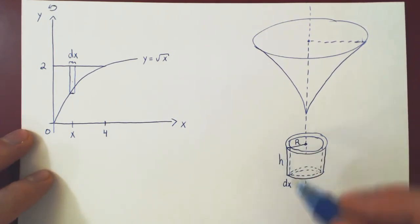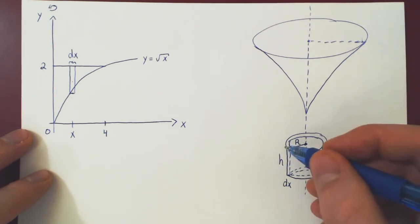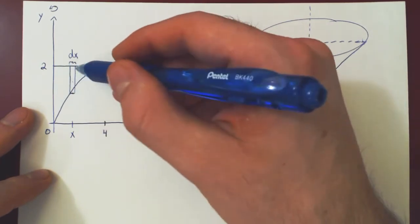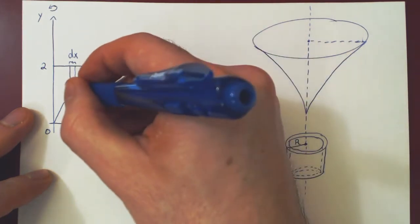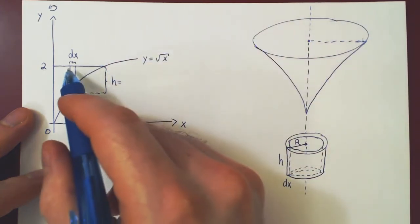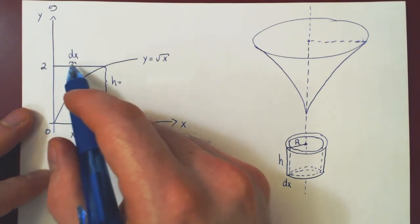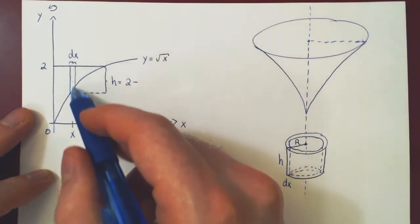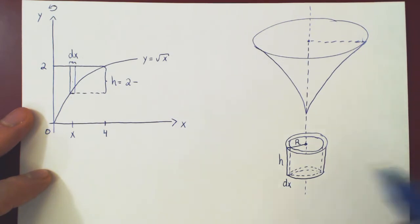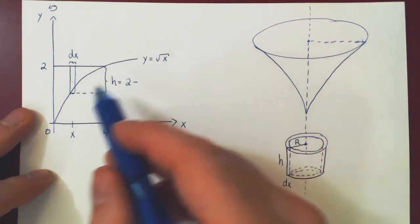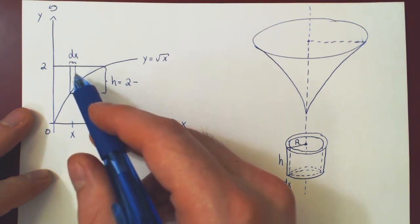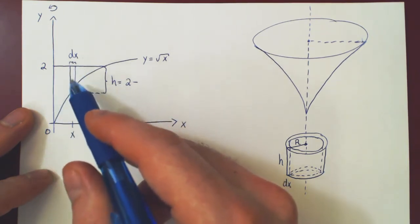The height of the shell is the height of the rectangle — a line segment along the y-axis — so we need the larger y-value minus the smaller y-value. The larger y-value is always 2. Since we have dx, everything must be a function of x, and we are on the curve y equals root of x, so the smaller y-value is root of x. Therefore, the height of the rectangle is 2 minus root of x.